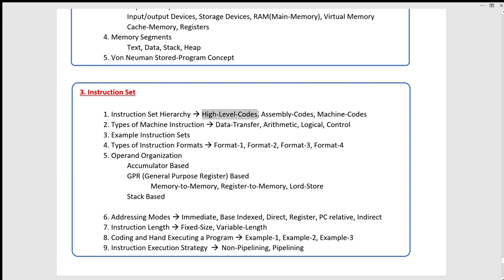There is no compatibility of high-level codes across machine architectures. The types of machine instructions — first of all, you can transfer machine instructions: data transfer instructions. You can do arithmetic operations — addition and subtraction. In logical operations, you can do comparison operations, check if-else conditions. You can do control instructions.